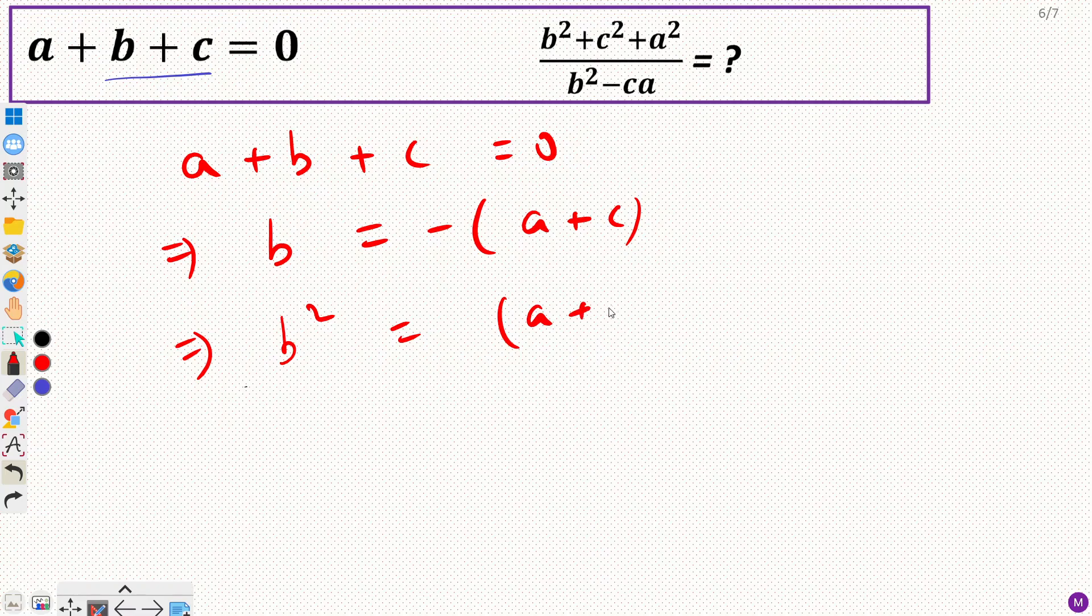So a plus c squared. Now from here, can I say b squared equals a squared plus c squared plus 2ac?